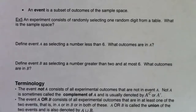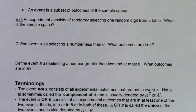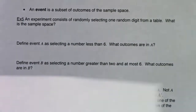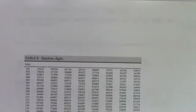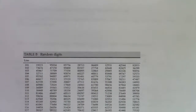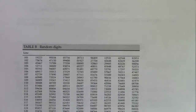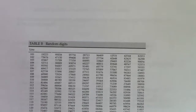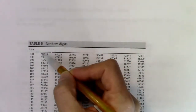An experiment consists of randomly selecting one digit from a digit table. What is the sample space? I'm going to pop back into that random digit table from chapter one, where we were just taking random digits. If I take any random digit off of this table — just one digit — what are the possible outcomes?